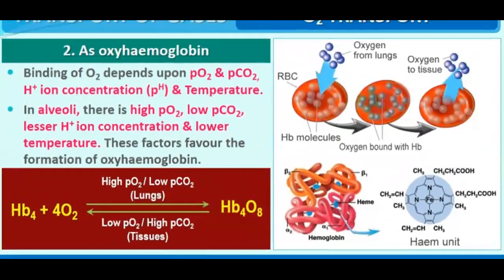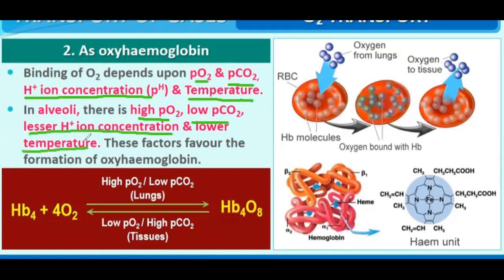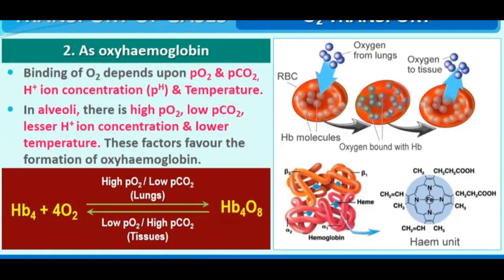The binding capacity of oxygen with hemoglobin depends on the partial pressure of oxygen, partial pressure of carbon dioxide, H+ ion concentration, and temperature. Higher pO2 leads to more oxyhemoglobin formation. When we have a fever, we feel very fatigued because the capacity of oxyhemoglobin formation decreases. In alveoli: high O2, low pCO2, lesser H+ concentration, and lower temperature favor oxyhemoglobin formation.